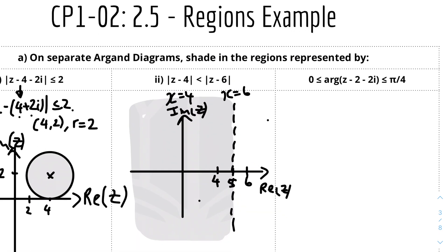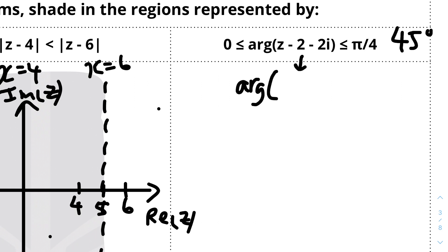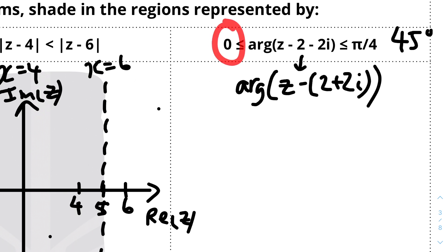For the third part: shade the region represented by 0 ≤ arg(z − 2 − 2i) ≤ π/4. We need to determine the angle: π = 180°, so π/4 = 45°. Rearranging gives arg(z − (2 + 2i)), so the center is at (2, 2). The two half-lines are at 0° and at 45° (π/4).